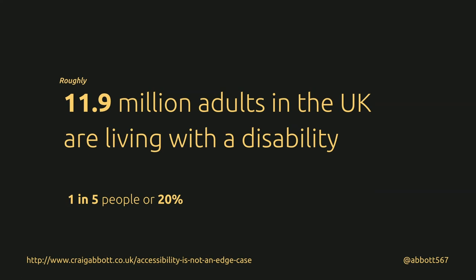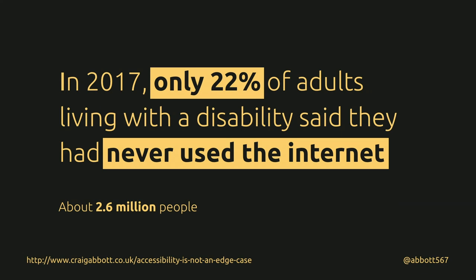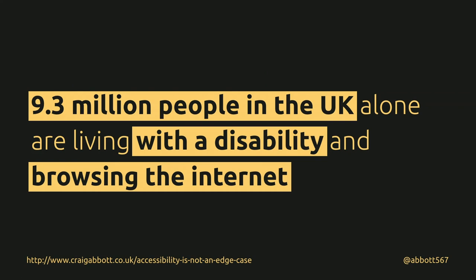But how does it affect digital products? In 2017, only 22% of adults living with a disability said they'd never use the internet — that's roughly 2.6 million people. Everyone else does. So with that in mind, this is potentially 9.3 million people living with a disability trying to use the apps and websites you've built, or 9.3 million people that can't buy things off your site if you haven't made it accessible.